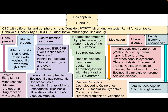If rash is present, differential diagnosis could be eczema, pemphigoid, mites, scabies, urticaria, angioedema, drug reaction, and mastocytosis. If rhinitis is present, this could be allergic rhinitis or non-allergic rhinitis with eosinophilia syndrome (NARES).